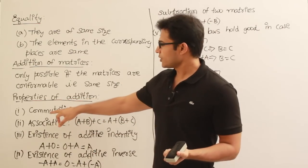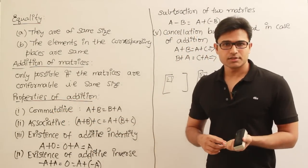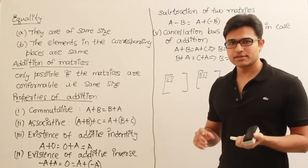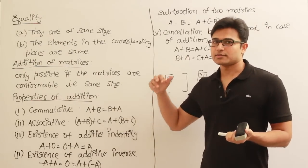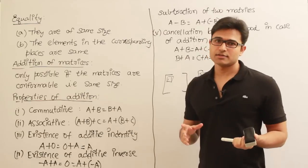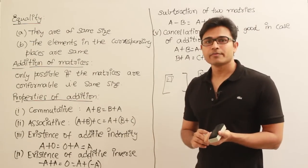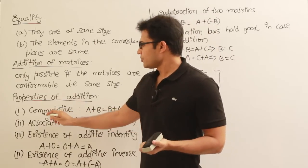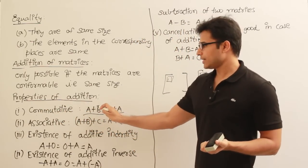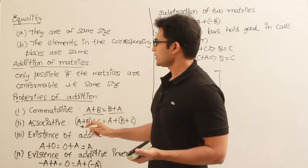The properties of addition are as follows. First, matrix addition is commutative. This is important because the properties differ from matrix multiplication — even though matrix addition is commutative, matrix multiplication is not commutative. Commutative means A + B = B + A; whether you write it one way or the other, the final answer is going to be the same.